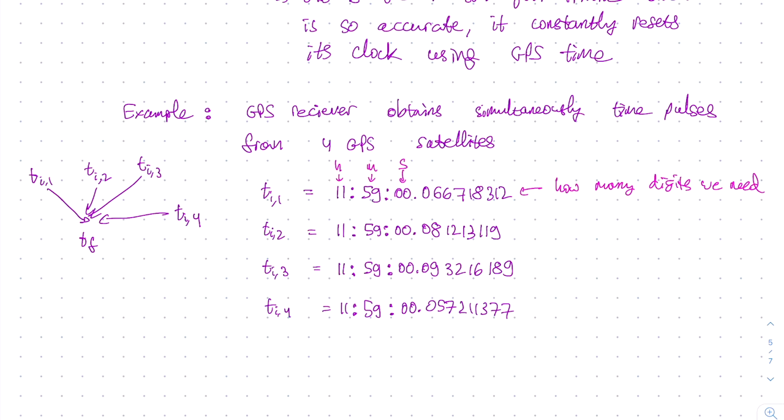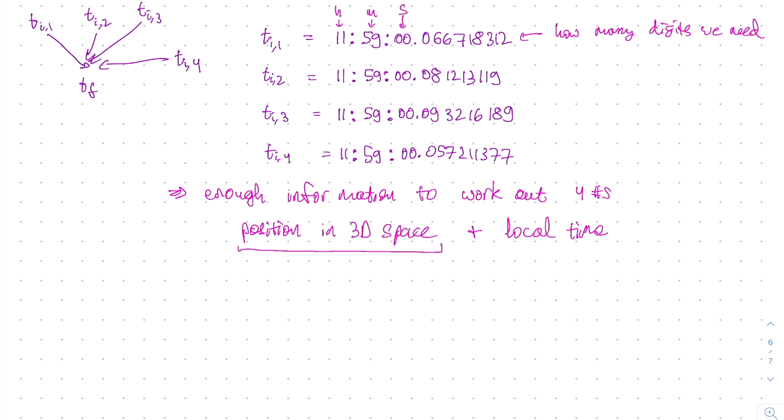Now the seconds are here listed to 9 decimal places. And that is how many decimal places the GPS system actually uses. Yes, it is indeed that accurate. Now why is the clock reading 11:59? Well, everyone does their homework at the very last possible minute, which is one minute before midnight. Now from this four time datum, we have enough information to figure out four numbers. And these four numbers are of course our position in three-dimensional space and our local time. Now the way to think about why we can determine our position in 3D space is because we have three time differences.